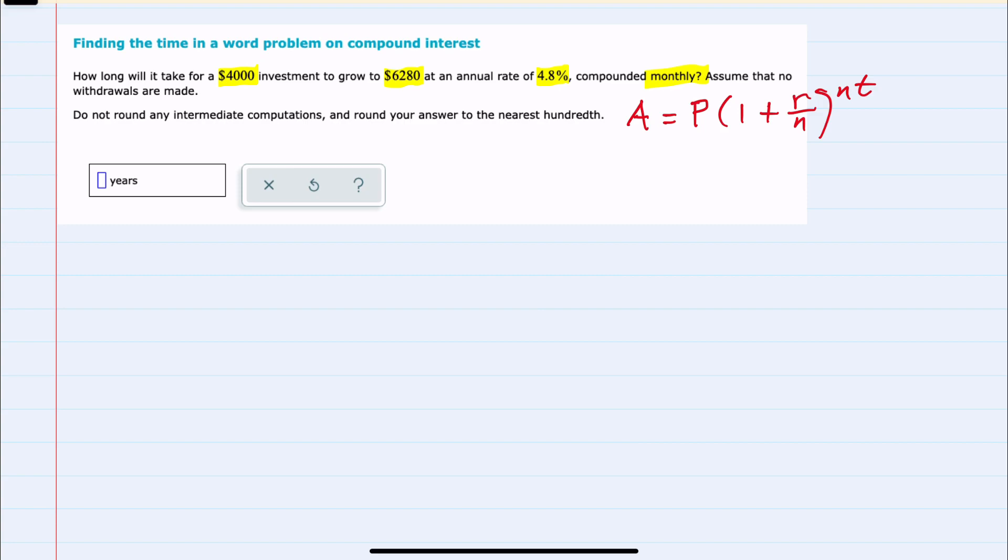or the amount, would equal the principal P times 1 plus the rate as a decimal divided by the number of times it's being compounded per year, raised to the power of that same value N, times T in years.